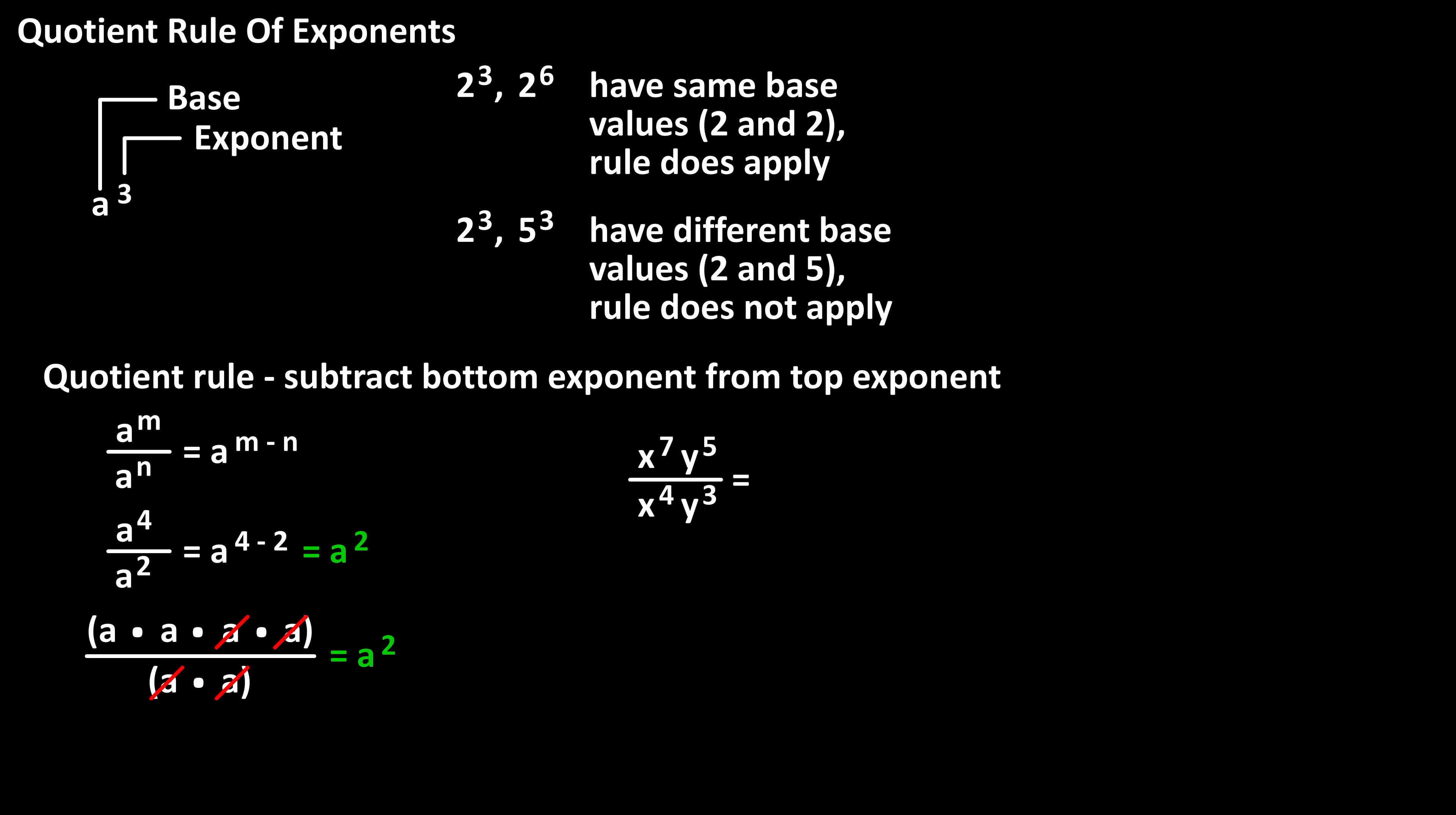To make it clear, we can section off the x's and the y's to get x to the 7 over x to the 4 times y to the 5 over y to the 3. Which gives us an answer of x raised to the 3 times y squared.